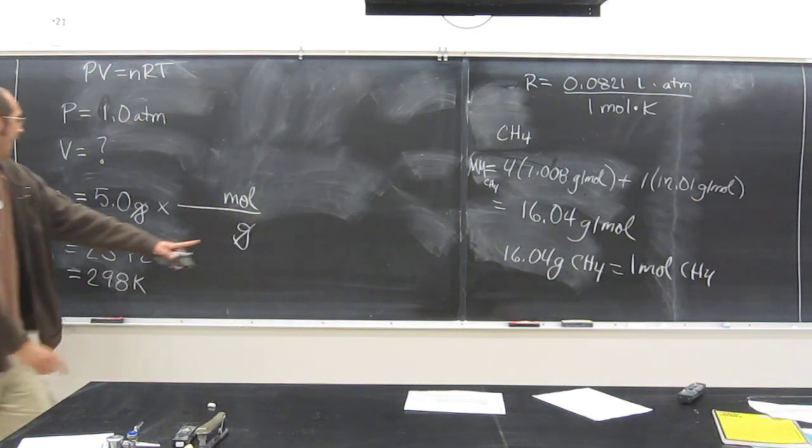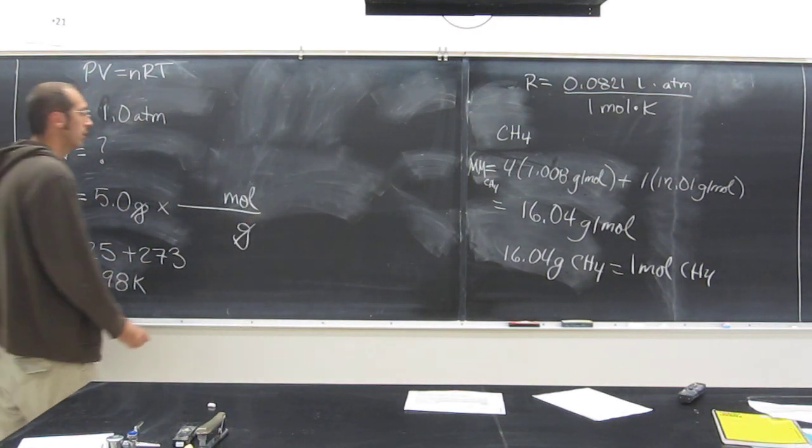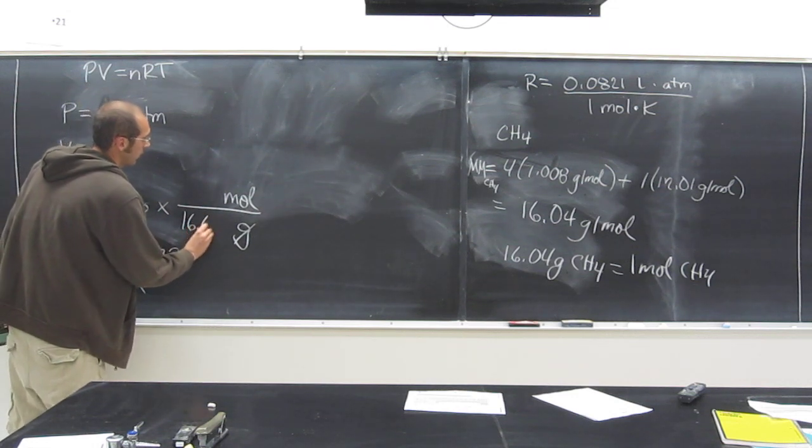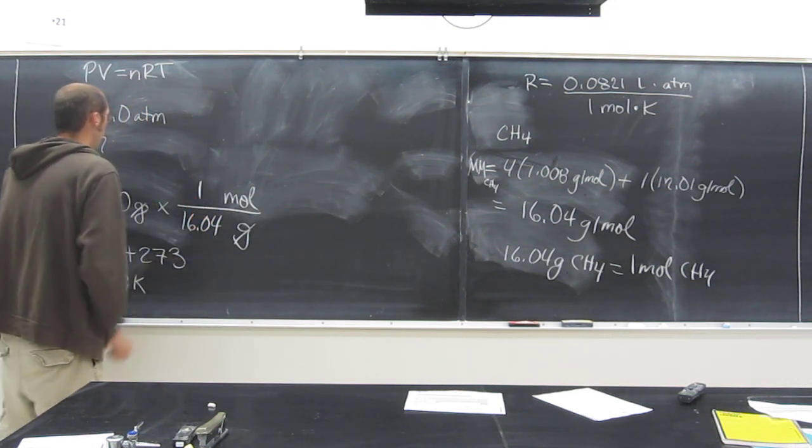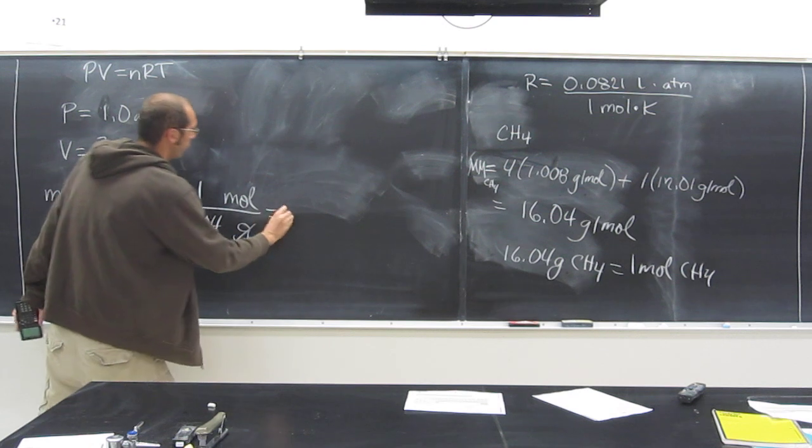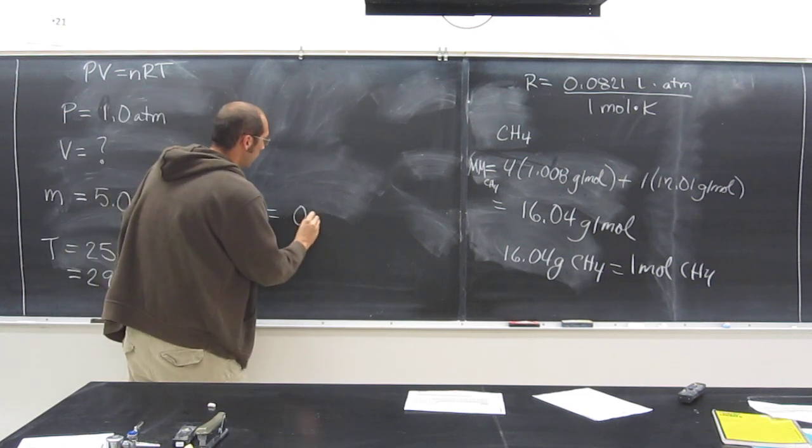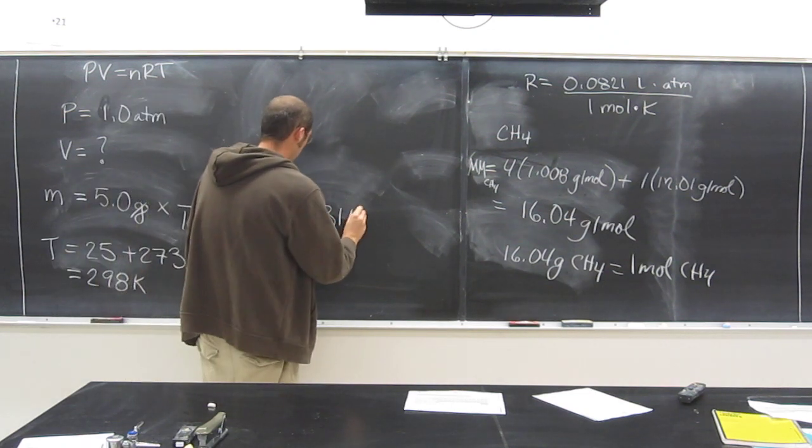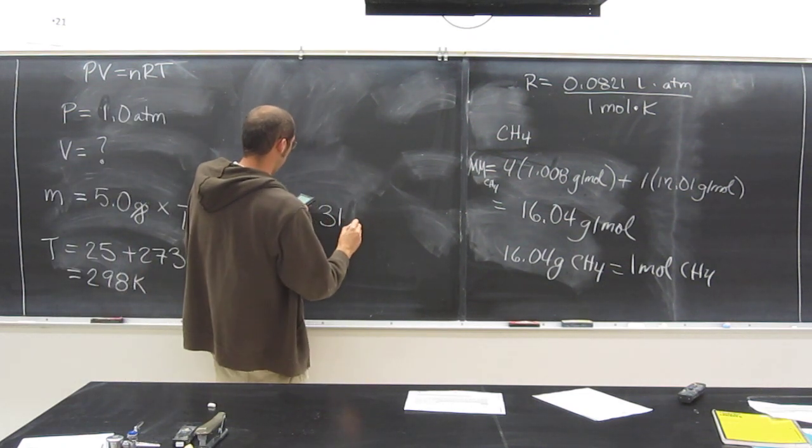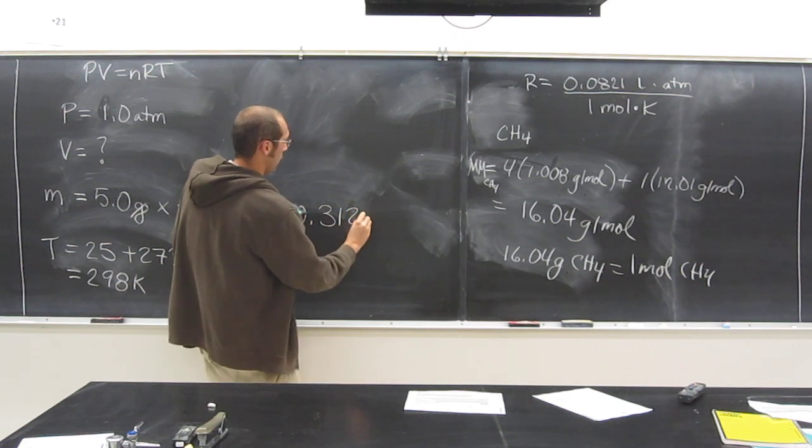So if we know that, and we've got 5 grams, we can just use that. So we say 16.04, 1 mole, cancel, cancel. So 5 divided by that number. So how many moles of methane do we have? 0.312 moles.